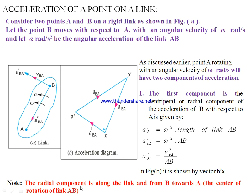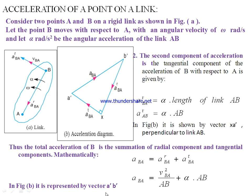The radial component is directed from b′ towards a′ — that is, parallel to link AB — and the tangential component is perpendicular to the link. The total acceleration of B with respect to A is the vector sum of the radial and tangential components, and in the acceleration polygon it is represented by the vector a′b′.